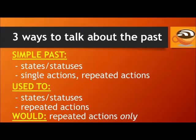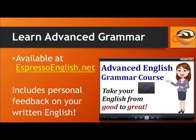Let's review the three ways to talk about the past. For repeated actions in the past which are not true today, we can use the simple past, 'used to,' or 'would' — though 'would' is for repeated actions only. If you want to learn more about advanced English grammar, sign up for the Advanced English Grammar course at EspressoEnglish.net. This course will help you master the advanced details of the English language and includes personal feedback on your written English.